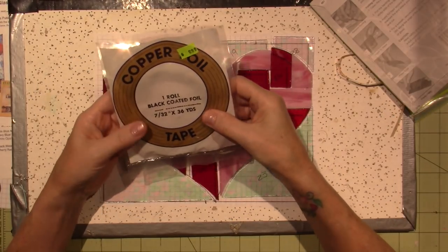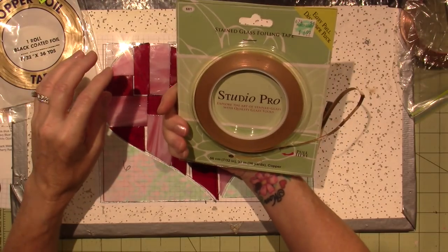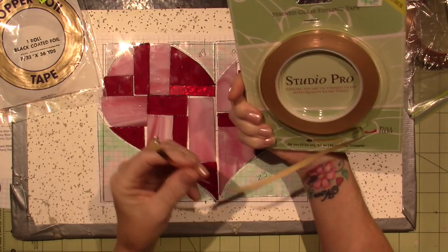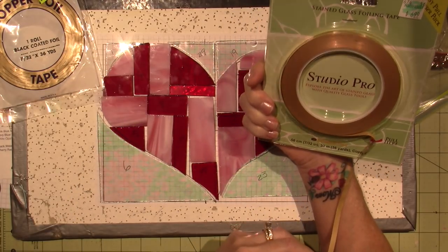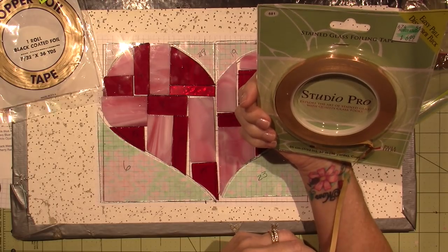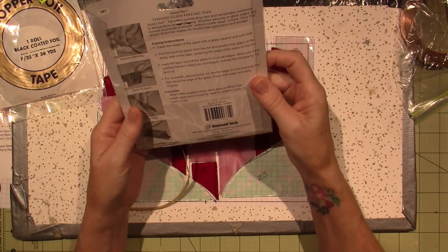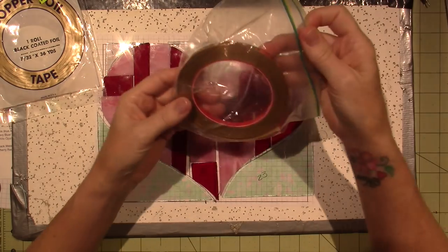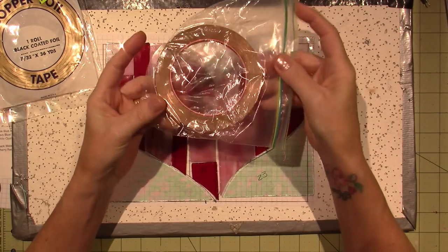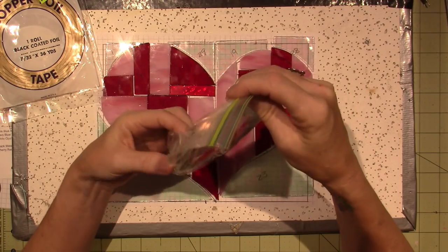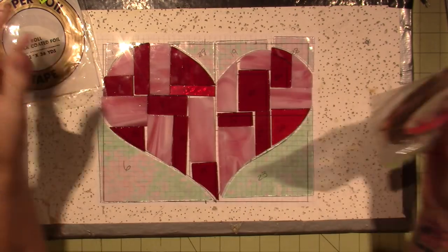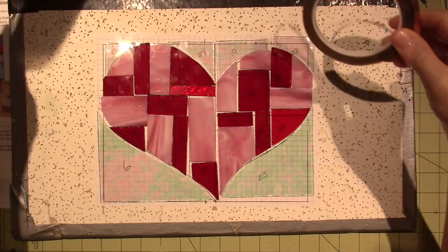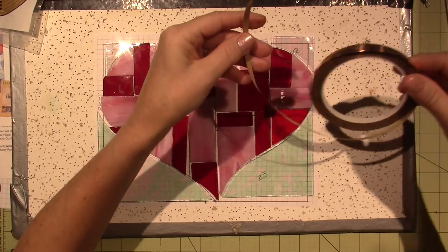The next step is to do the copper foil. I have this is black coated. I think I'm going to use that. Stained glass foiling tape. I got this at Hobby Lobby, by the way. Hobby Lobby has a bunch of stained glass supplies. And this I think is extra wide. As I said previously, I haven't done this in a while, so I'm just hoping that I don't forget completely what I'm doing.